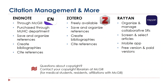For citation management and other useful resources: EndNote is available through McGill if you have a username and password, or it can be purchased through your MUHC department. It's used to save and organize your references, create bibliographies, and cite references directly in Word. Zotero is a similar software but freely available — you can save and organize your references, create bibliographies, and cite references directly in Word. And then there's Rayyan, which is used to organize and manage collaborative systematic reviews. You can use it to screen and select articles to include in your review — it comes as a mobile app with free and paid versions. If you have questions about copyright, contact your copyright librarian at McGill — this is for medical students, residents, and anyone with McGill affiliations.